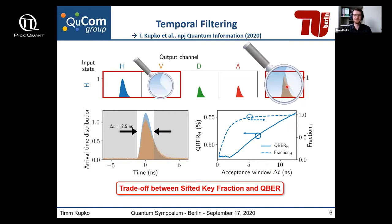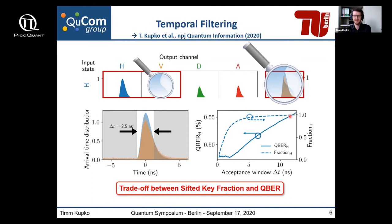Looking more closely, we can distinguish different contributions to the quantum bit error ratio in our system. We have regions with uncorrelated detection events attributable to detector noise — around 100 dark counts per second — and correlated events attributable to optical imperfections in our setup. To reduce the error contribution and improve our quantum bit error ratio, we can discard events lying outside a certain acceptance time window. Reducing the acceptance time window enhances the QBER due to better signal-to-noise ratio, though there is a limitation from our optical imperfections.